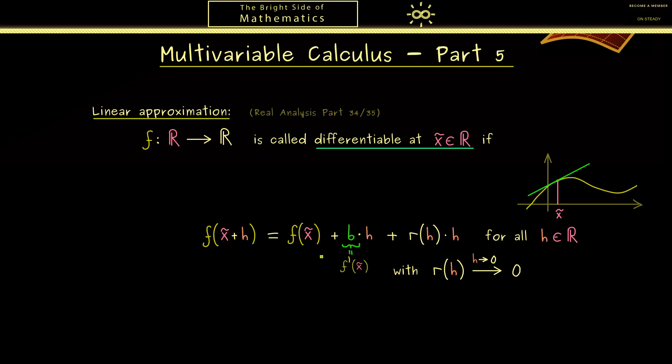And usually we denote this by f prime at x tilde. Then the whole definition reads that the function f is differentiable at the point x tilde if such a number b exists and such a function r exists. So then this is the definition and it tells us we find such a best linear approximation around x tilde.